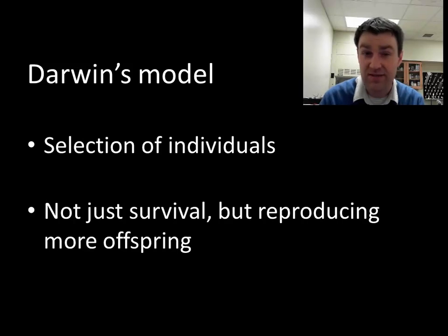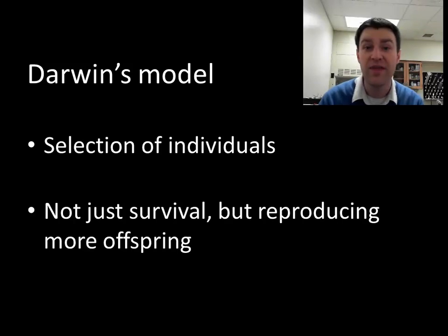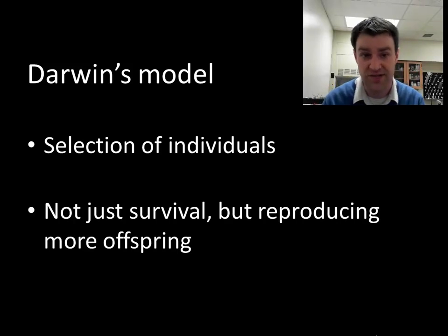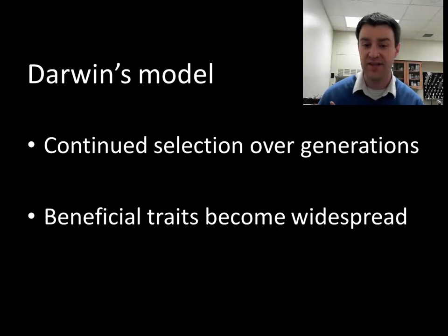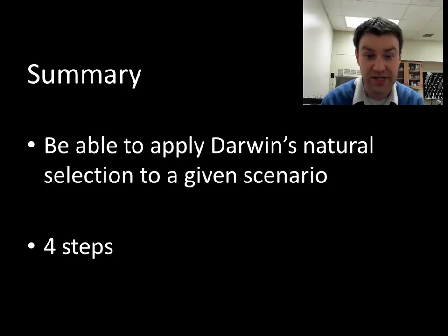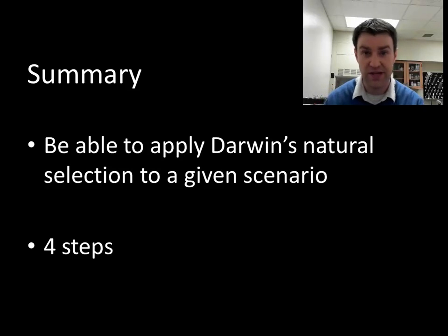Biologists often use the word fitness, and sometimes natural selection is summarized as survival of the fittest. A lot of students focus on the word survival, but really the important word is fittest. Evolutionary fitness is simply how many offspring an organism reproduces — an organism is more fit if it out-reproduces others in its population. Finally, that selection typically has to occur over many generations to make a certain phenotype widespread. You need to be able to apply this story and tell me all four steps for any given prompt.